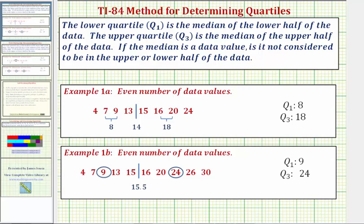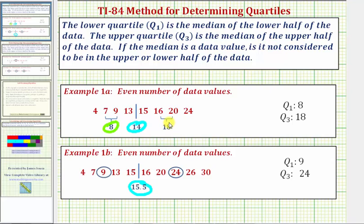Looking at examples where we have an even number of data values, notice how the median here would be 14, and here we'd have a median of 15.5. In these two examples, the median is not a data value, and therefore Q1 is the mean of 7 and 9, which is 8, and Q3 would be the mean of 16 and 20, which is 18. In this example, the median of the lower half would be 9, so Q1 is 9, and Q3 would be the median of the upper half, or 24.